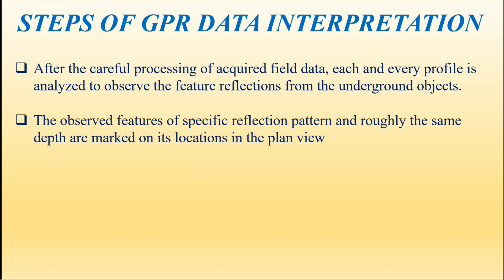The next step is that the observed features of a specific reflection pattern at roughly the same depth are marked on their location in the plane view. You collect data in several cross-sections or along-sections, then observe the pattern of object reflections. If the same pattern appears in different sections at a specific location, you mark those points.